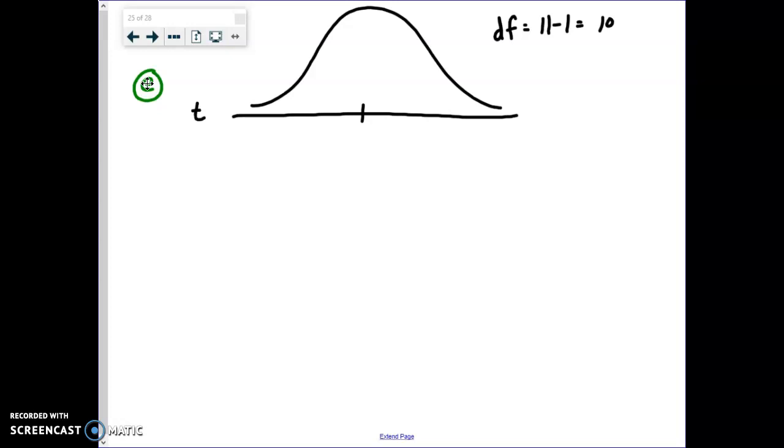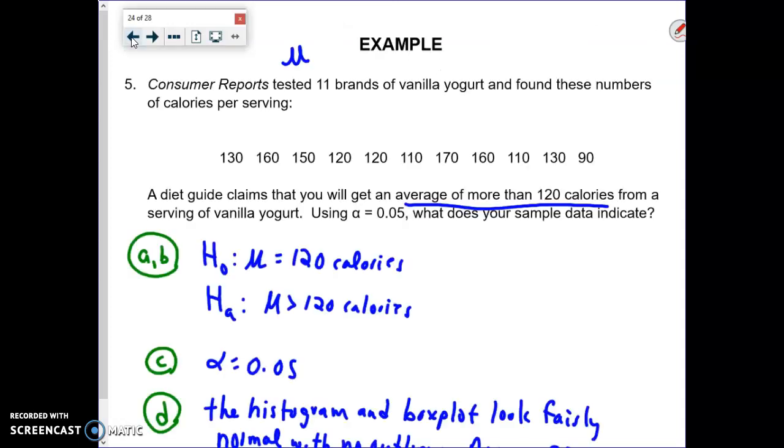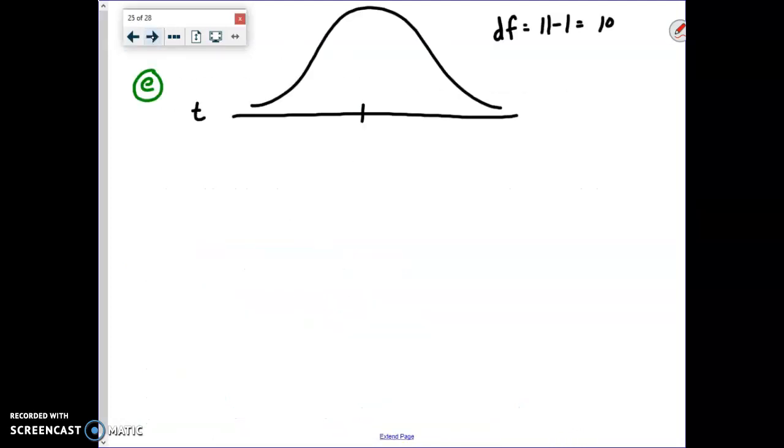Alpha, we go this time on the right tail, because if you look at our alternative hypothesis, it says greater than 120 calories. So, it's going to go on the right tail, because we're going to see if our test data is strong enough to go past that level of alpha. Here's alpha, and that is 0.05. Where does our test statistic fall? That becomes the next thing—we've got to calculate our test statistic.